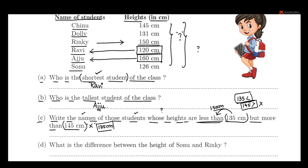We are looking for heights more than 135 and less than 150. Dolly's height is 130, which is less than 135, so Dolly does not qualify. If the height is less than 150, it qualifies.